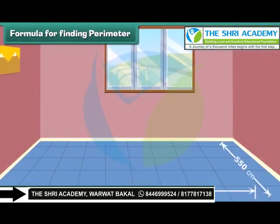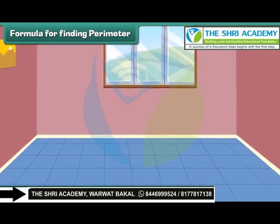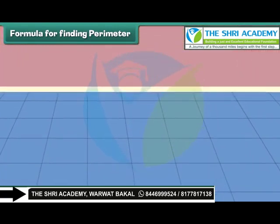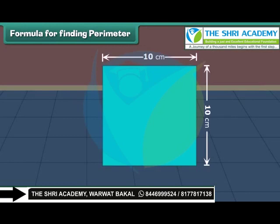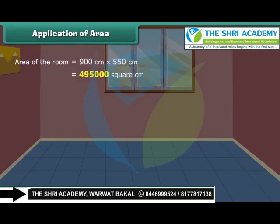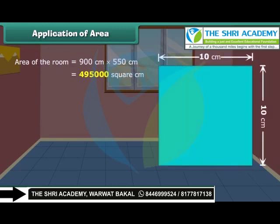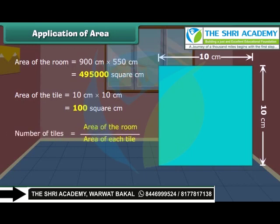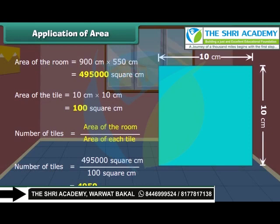This is a room of length 900 centimeters and width 550 centimeters. Rohan wants to change the tiles of the floor. If each side of the new tile is 10 centimeters, how many tiles will be needed? Area of the room is equal to length multiplied by width, which equals 4,95,000 square centimeters. Area of each tile is equal to 10 multiplied by 10, which equals 100 square centimeters. The number of tiles needed is found by dividing the area of the room by the area of each tile. Thus, the number of tiles needed is 4,950.